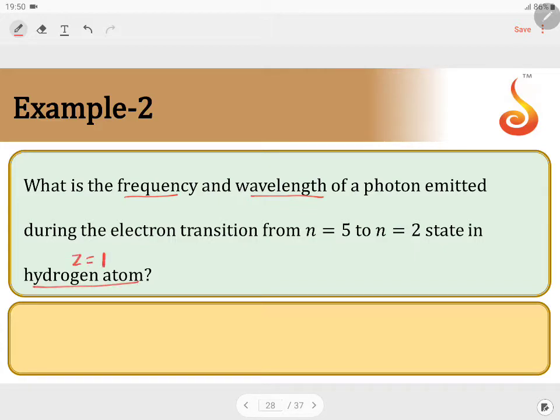Hydrogen atom means z is equal to 1. Among the two n values, how do we take it? Always the lower number will be n1, the higher value will be n2. So this can be solved in two ways.